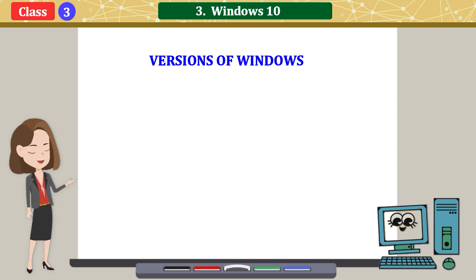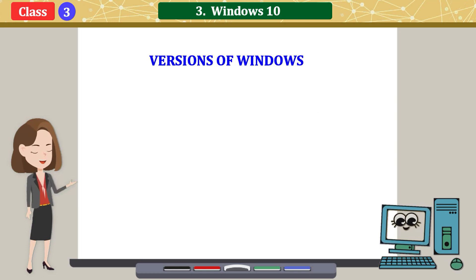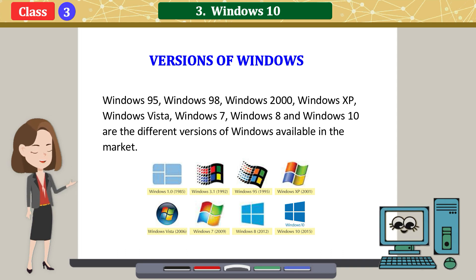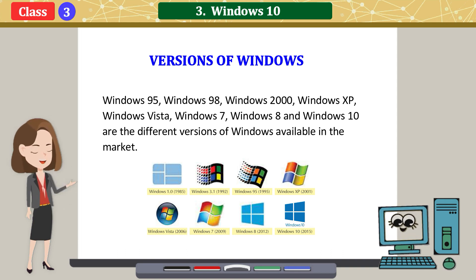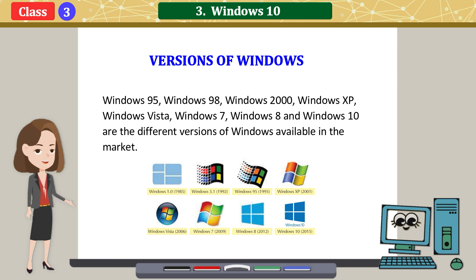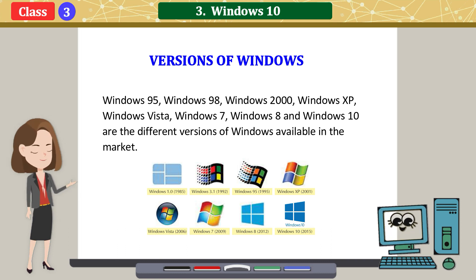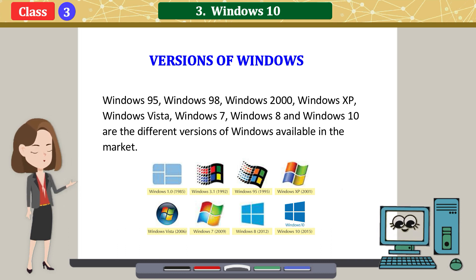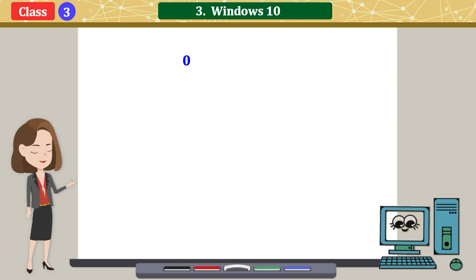Versions of Windows: Windows 95, Windows 98, Windows 2000, Windows XP, Windows Vista, Windows 7, Windows 8, and Windows 10 are the different versions of Windows available in the market.